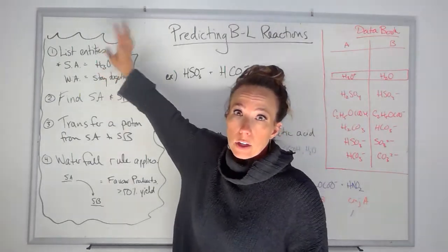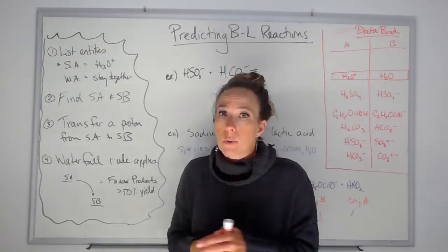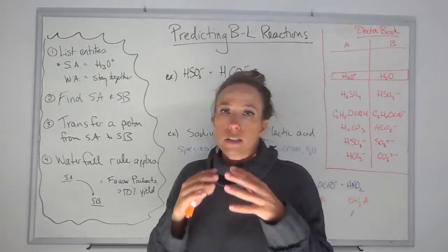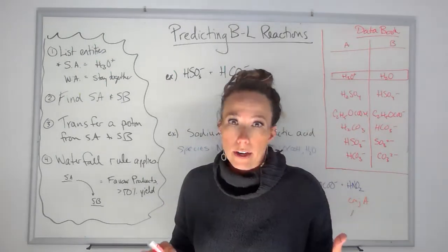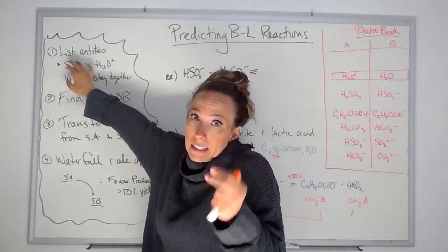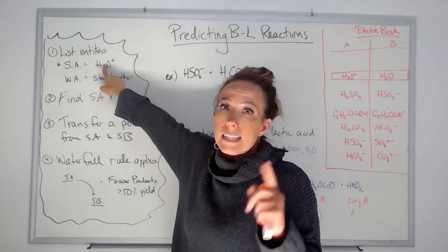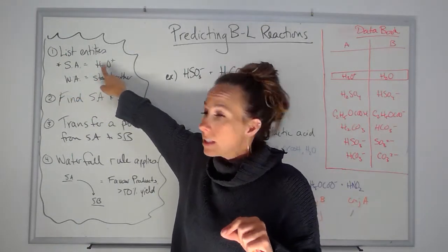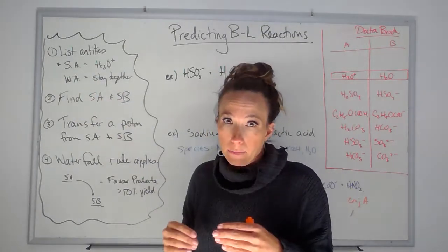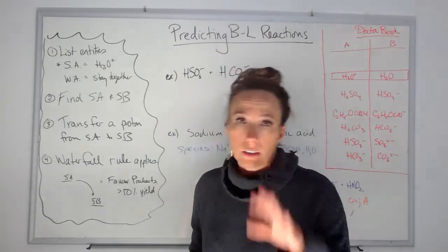Just like that unit, we have to list our species. The things to really remember in acids and bases: if it's an ionic compound, we break it up; if it's a molecular compound, we keep it together. But this needs to be highlighted — if it's a strong acid, we're going to list H3O+ as our species. If it's a weak acid, we keep it together. And if it's a solution, we write water.